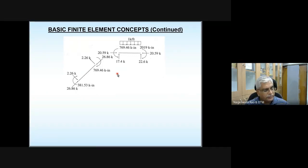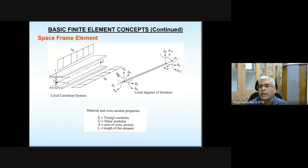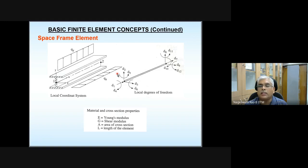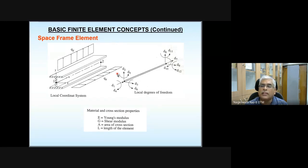Are there any questions? Extending the analysis to space frames is straightforward except that one more dimension is added and degrees of freedom increase. For a plane frame, the element stiffness matrix is 6×6 because each node has 3 degrees of freedom with 2 nodes. For a space frame, there are 6 degrees of freedom at each node, so the total element equation size is 12×12.